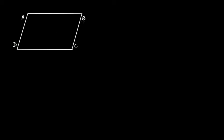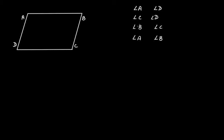We have a parallelogram ABCD and we have to prove that the pairs of adjacent angles in a parallelogram are supplementary. The pairs of adjacent angles are: angle A and angle D, angle C and angle D, angle B and angle C, and angle A and angle B. The property states that the sum of a pair of adjacent angles is equal to 180 degrees — that is what supplementary means.